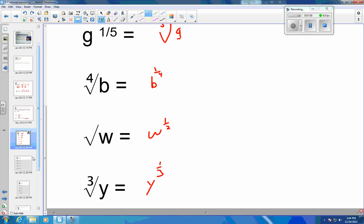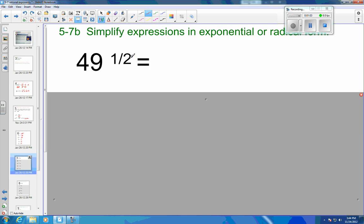Now you've got the letters, let's move on to numbers. So 49 to the 1/2 power would be the same thing as the square root of 49, which would be 7.